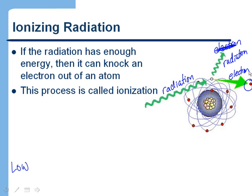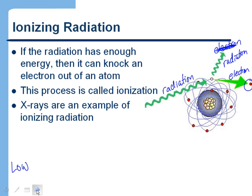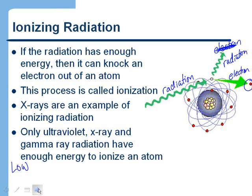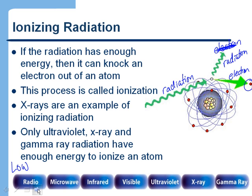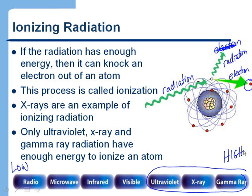Ionizing radiation is radiation that can knock an electron out of orbit. Not all radiation can do that. X-rays are an example of radiation that can, and as you might imagine, it's only the high-energy radiation that can ionize an atom. X-ray radiation, gamma-ray radiation, and ultraviolet — all of those at the high-energy end of the spectrum — have the ability to ionize an atom.